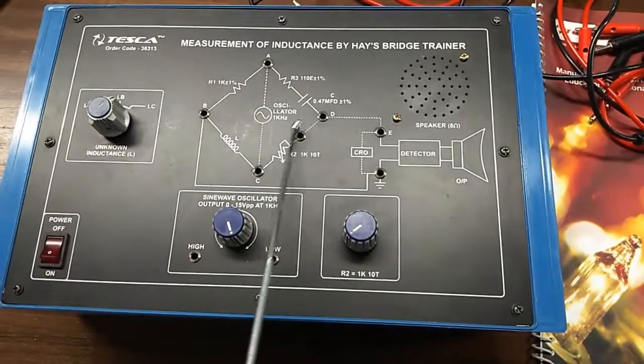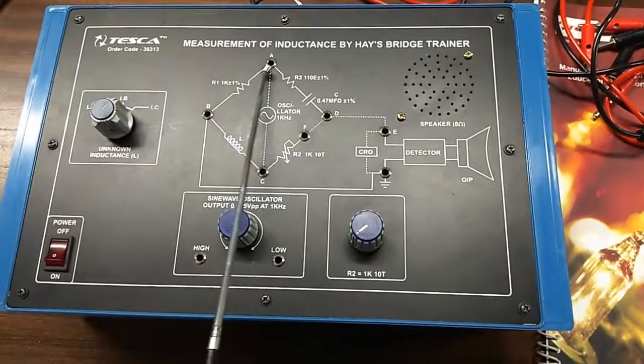Here A to C, F to D, D to E, these are in dotted line, so we need to build this connection.